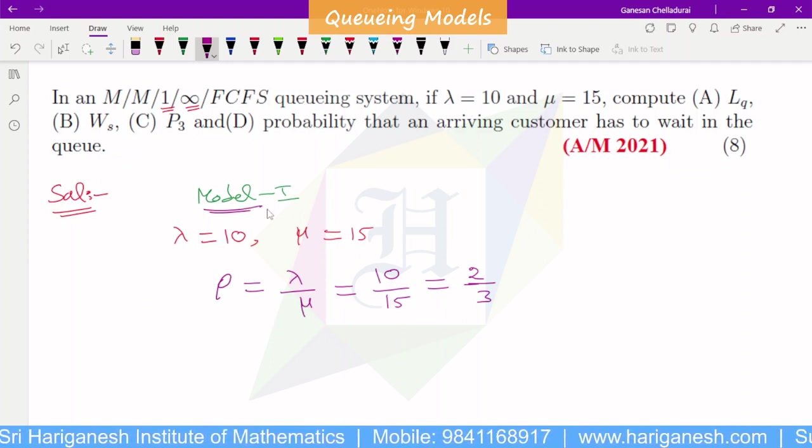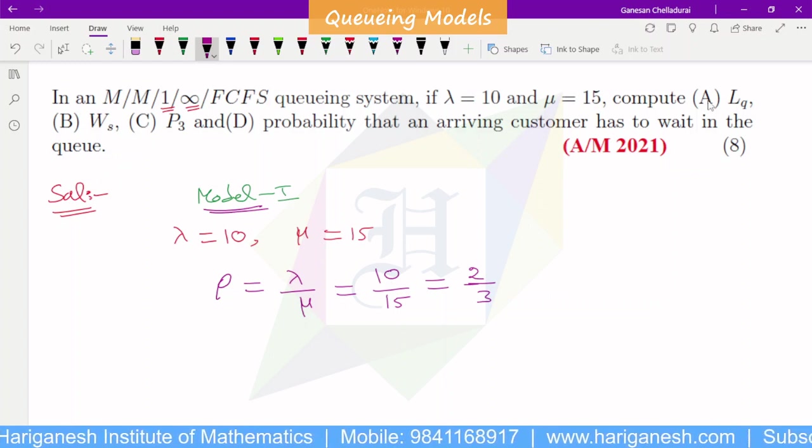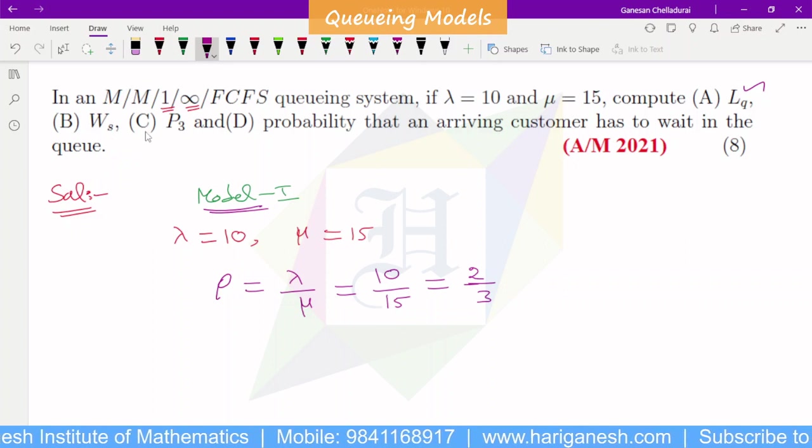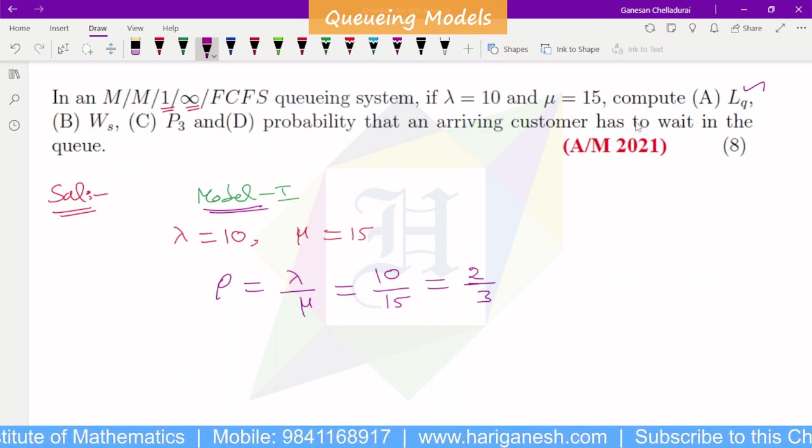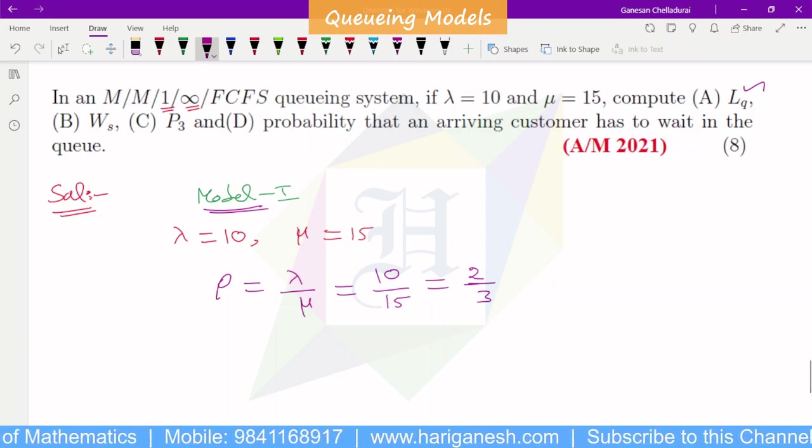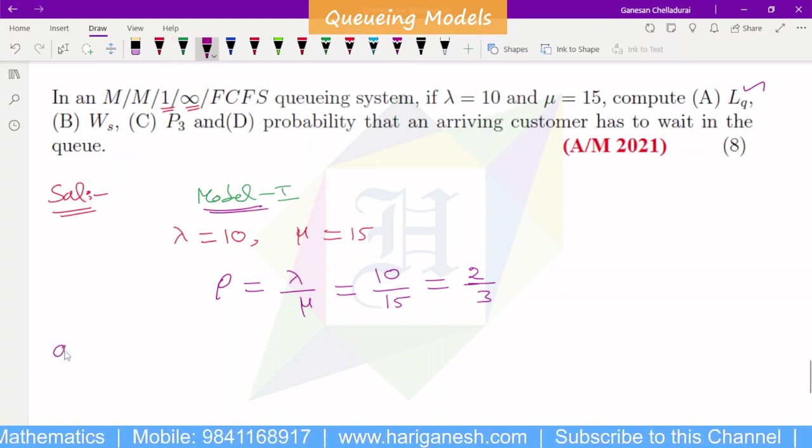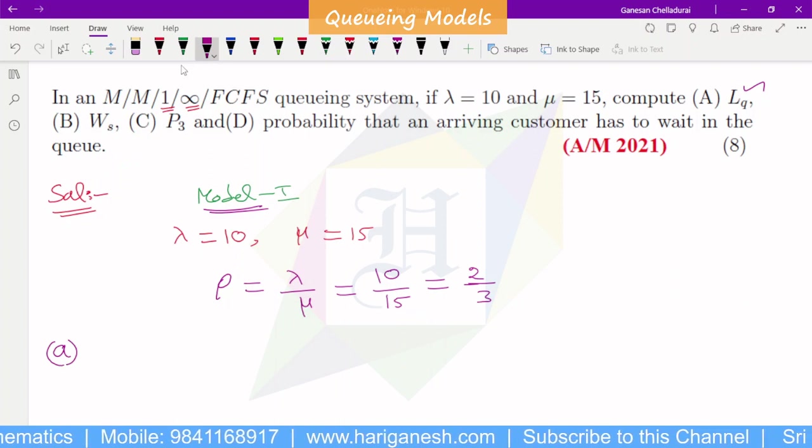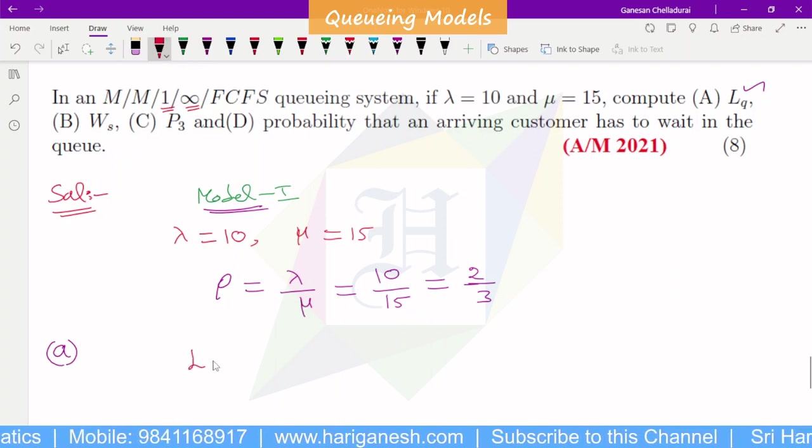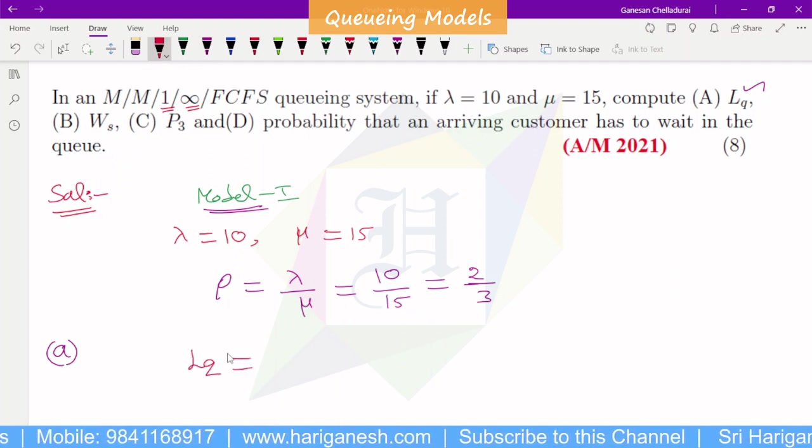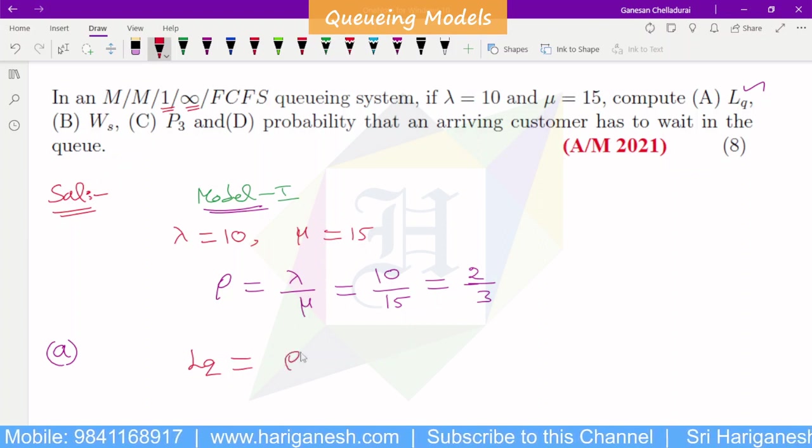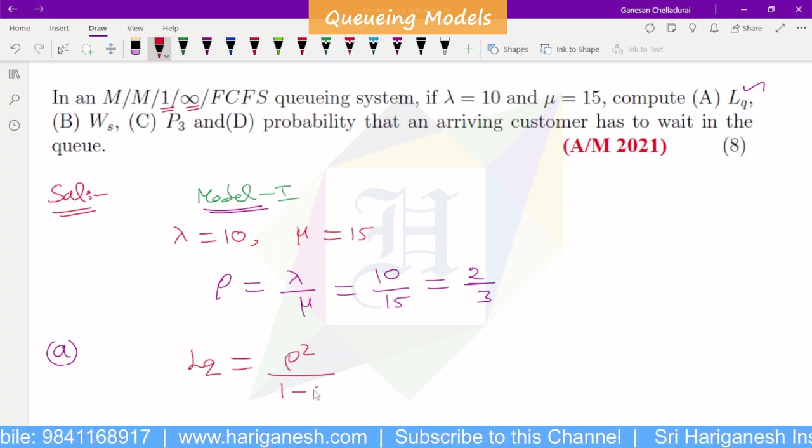So this is model 1. This is formula 1, first question: LQ, and then WS, P3, and then probability that an arriving customer has to wait in the queue. That is what we can do. The first question is LQ. LQ formula for model 1 is rho square by 1 minus rho.